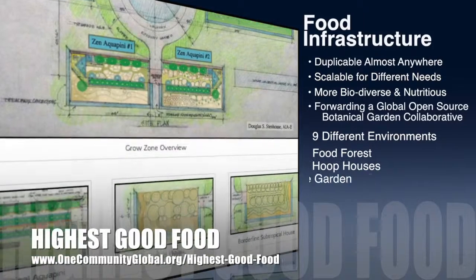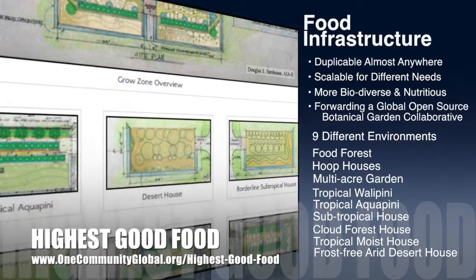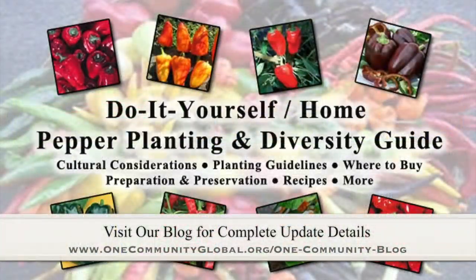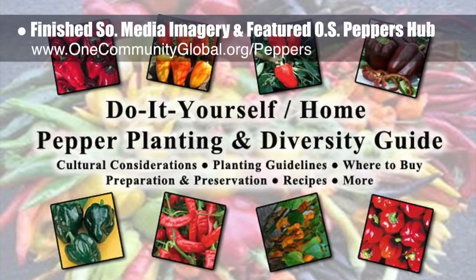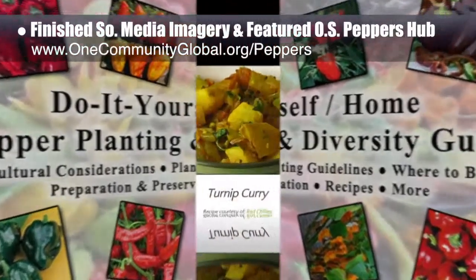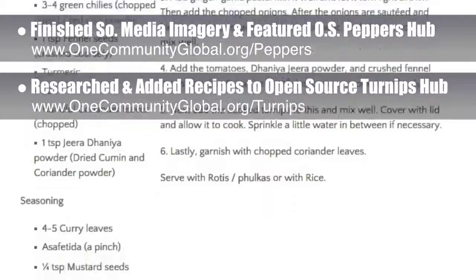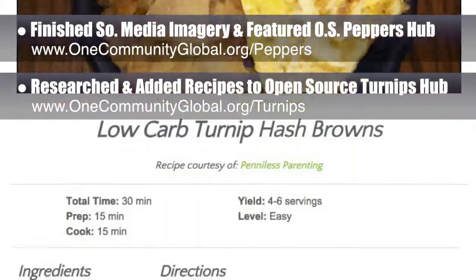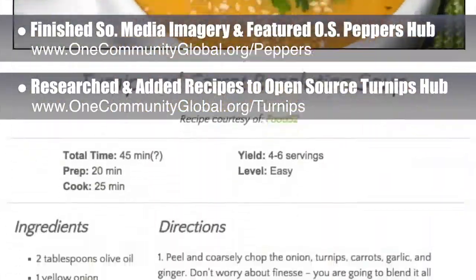One Community's approach to Highest Good Food is duplicable almost anywhere, scalable for different needs, more biodiverse and nutritious, part of forwarding a global open source botanical garden collaborative, and includes nine different free shared and duplicable growing environments. This week, the core team working on Highest Good Food finished the final social media imagery and featured our open source peppers hub.